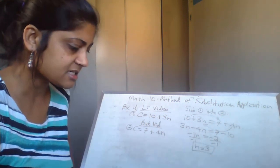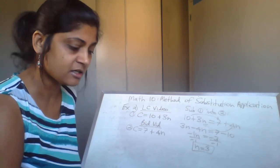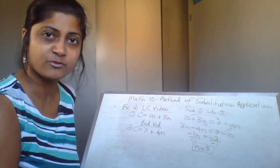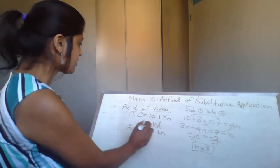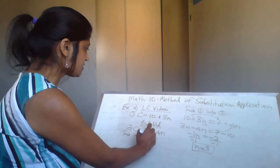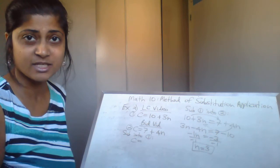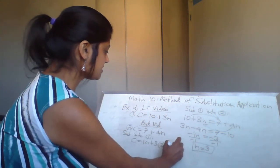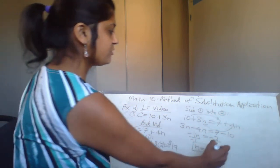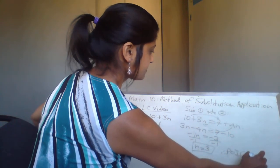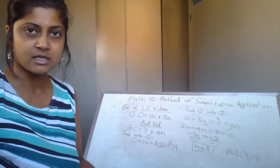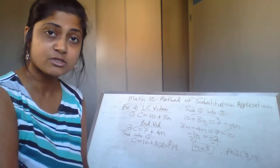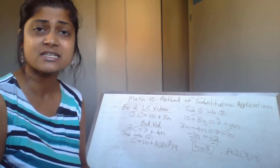We're going to divide by negative 1 on both sides, and N equals 3. In this question, N represents the number of video games I am renting. So if I want to rent only 3 video games, it doesn't matter if you go to LC Video or Big Vid — the cost is going to be the same. Let's sub this N value back into equation 1: 10 plus 3 times 3, so this is 10 plus 9, which is $19. The point of intersection is (3, 19) — for 3 video games it's going to cost $19 at both places.